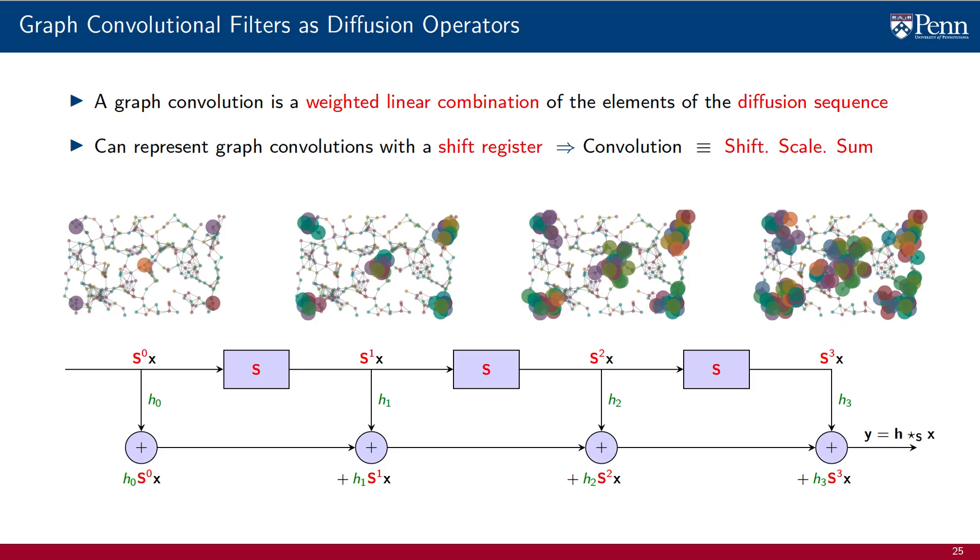Since this is a filter with 4 taps, the accumulated sum is the output of the convolutional graph filter. This shift register structure is the one we use in the implementation of graph filters. We shift, we scale, we sum.